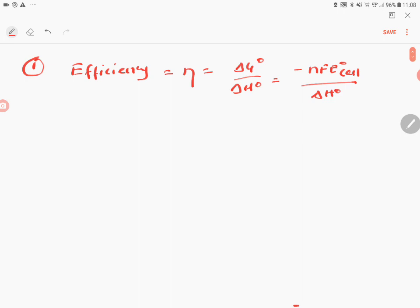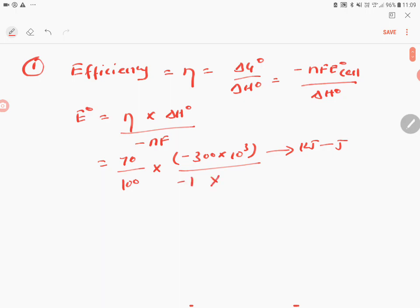Therefore, E° = η × ΔH°/(-nF). Since efficiency is given as a percentage: (70/100) × (-300 × 10³) / (-1 × 96,500 coulombs). Converting kilojoules to joules here.